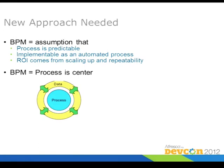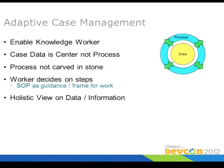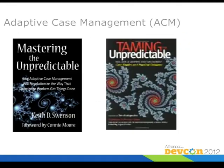Now coming to knowledge workers — what do you think is the most important thing a knowledge worker needs? Information — that was the right answer. So, the information or data is actually at the center of a knowledge worker process. The data drives the process, or the information drives the process. The guys who came up with this kind of adaptive case management idea are Keith Swenson with some co-authors.